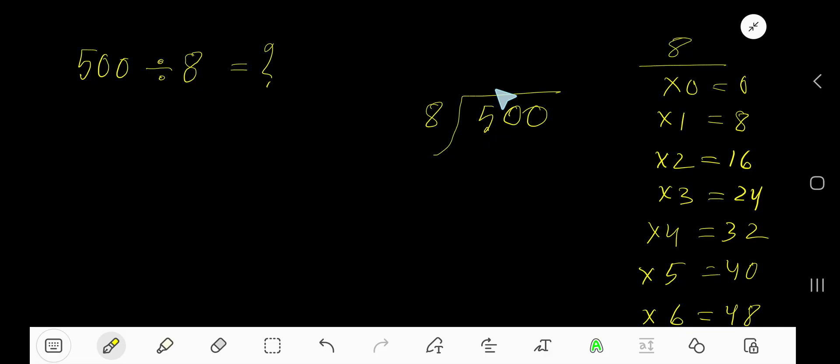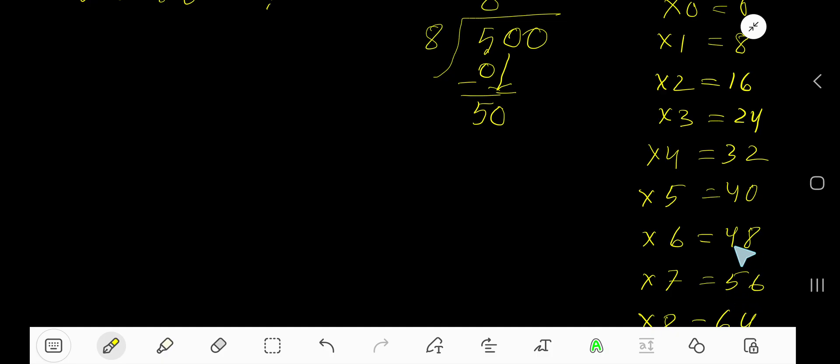8 goes into 5 how many times? 0 times, as 5 is less than 8. 0 times 8 equals 0. Subtract, bring down this digit 0. 8 goes into 50 how many times? 7 times equals 56 which is greater, so 6 times equals 48. Write 6. 6 times 8 equals 48.